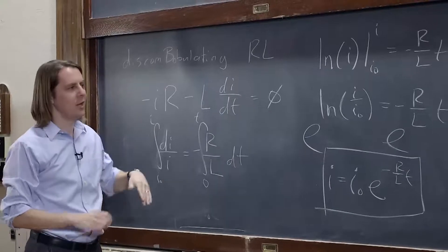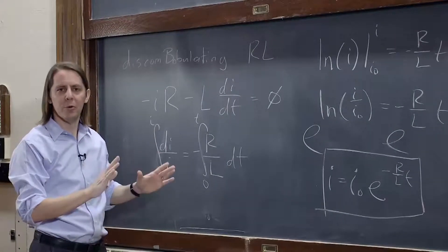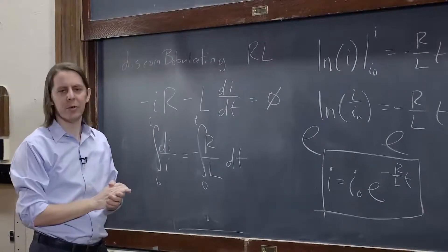So as the current dies away, the magnetic field goes away, there's no dissipation of the resistor, and everything goes to zero.